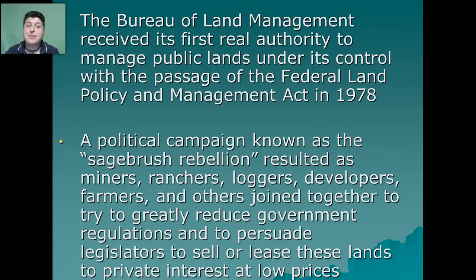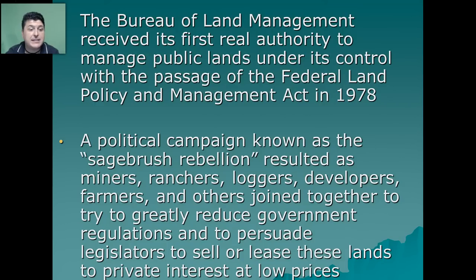It was also during this time that the Bureau of Land Management received its first real authority to manage public lands under its control with the passage of the Federal Land Policy and Management Act in 1978. As a result of these new regulations, a political campaign known as the Sagebrush Rebellion resulted, as miners, ranchers, loggers, developers, farmers, and others joined together to try to greatly reduce government regulation and persuade legislators to sell or lease these lands to private interests at low costs.